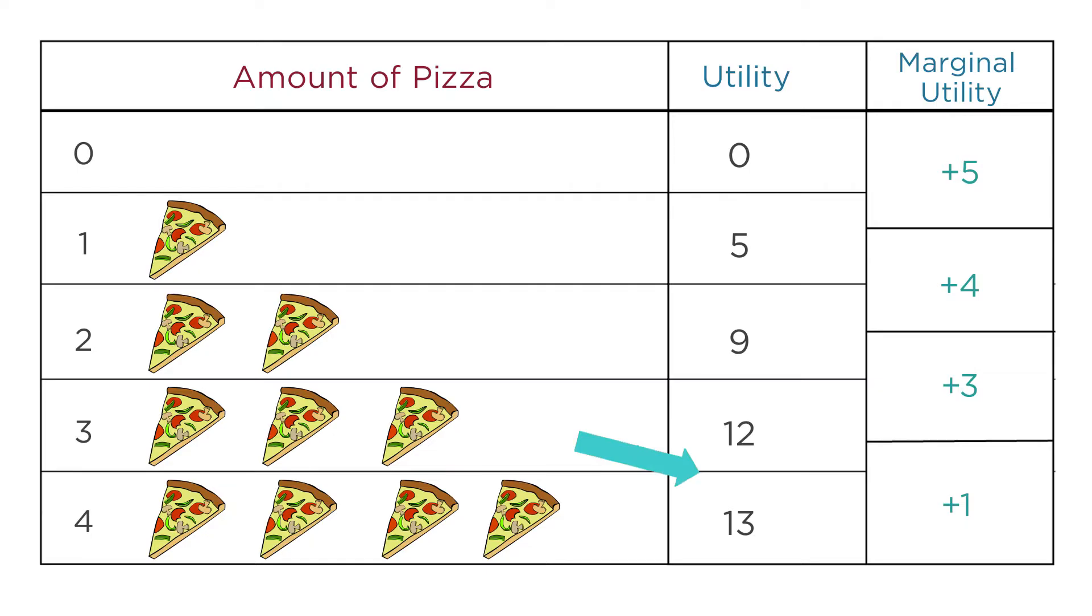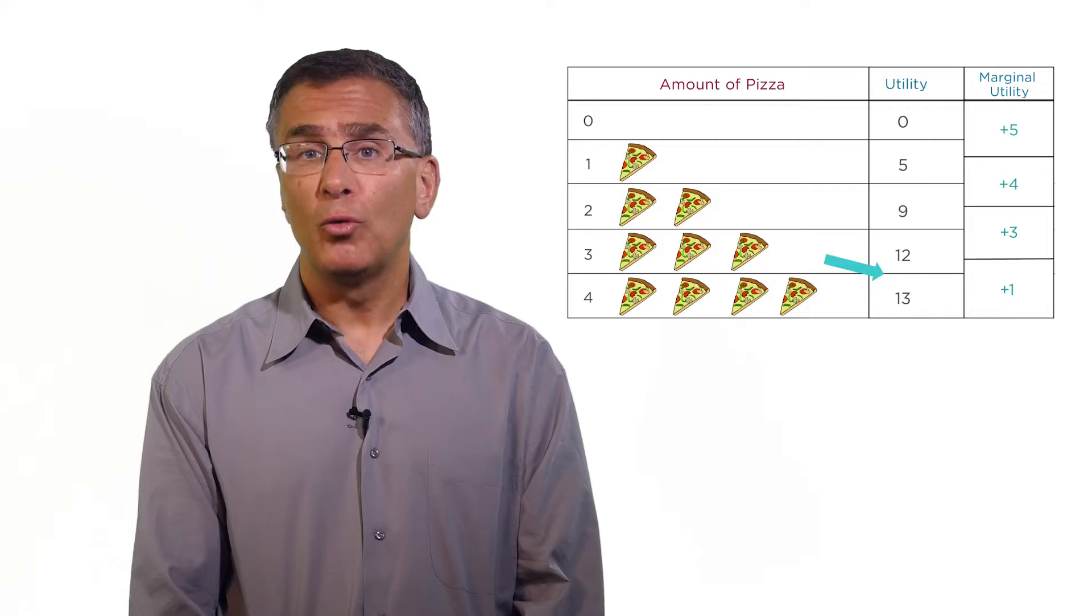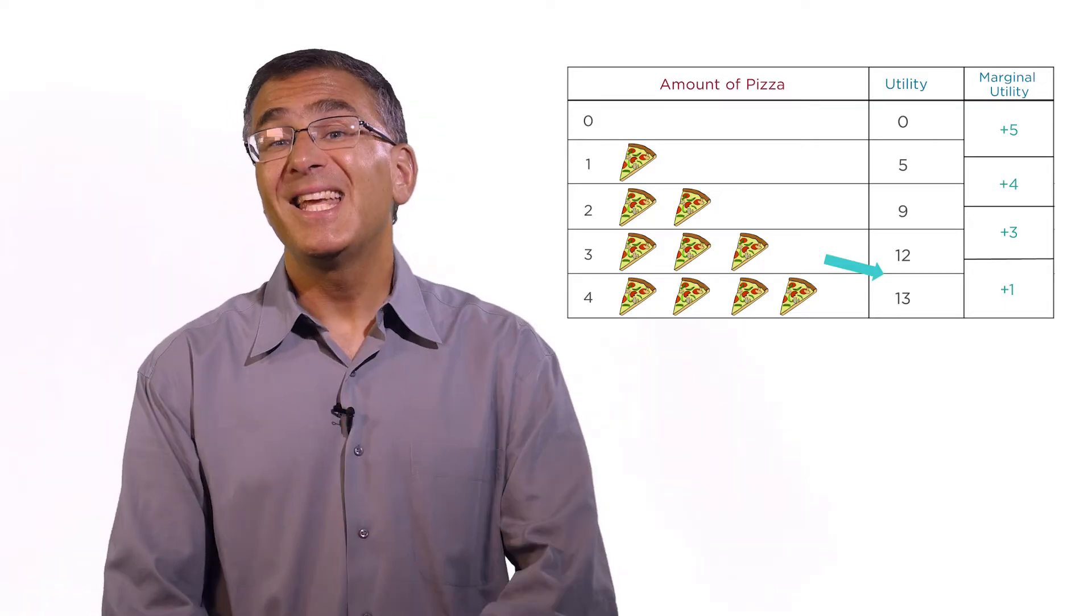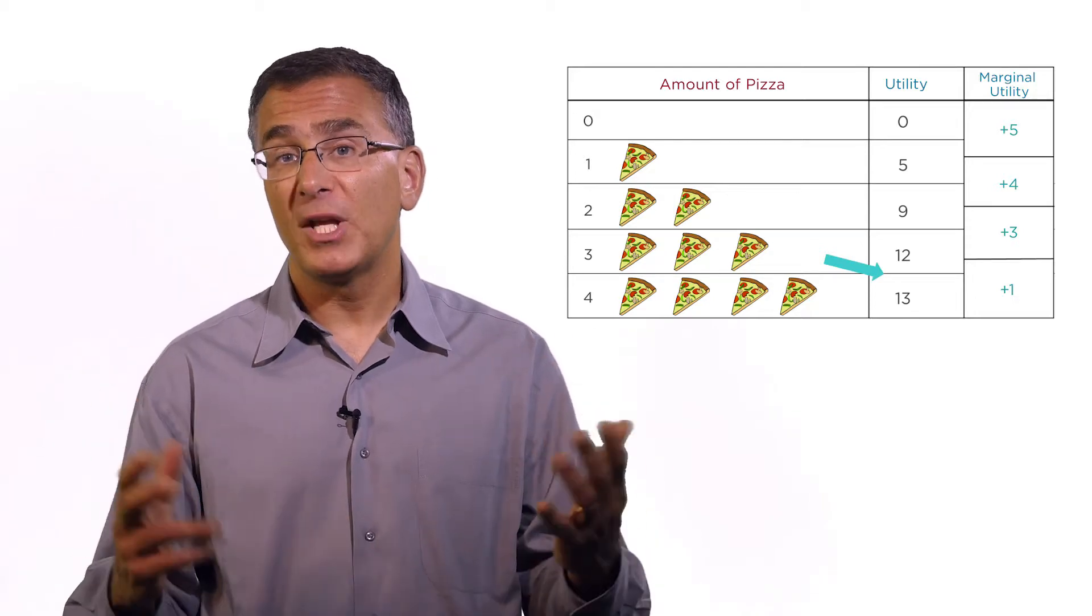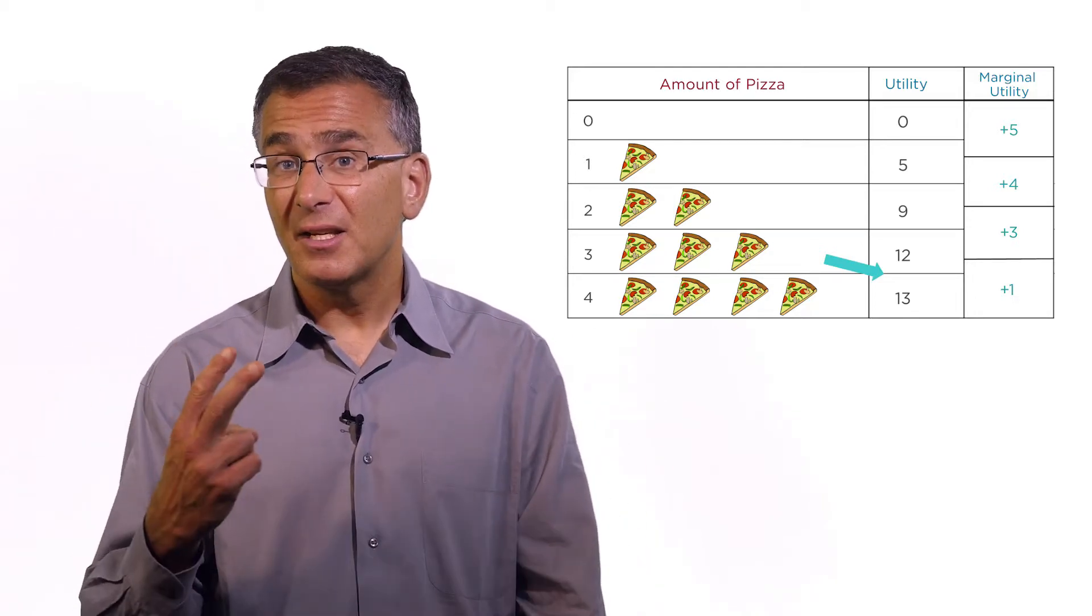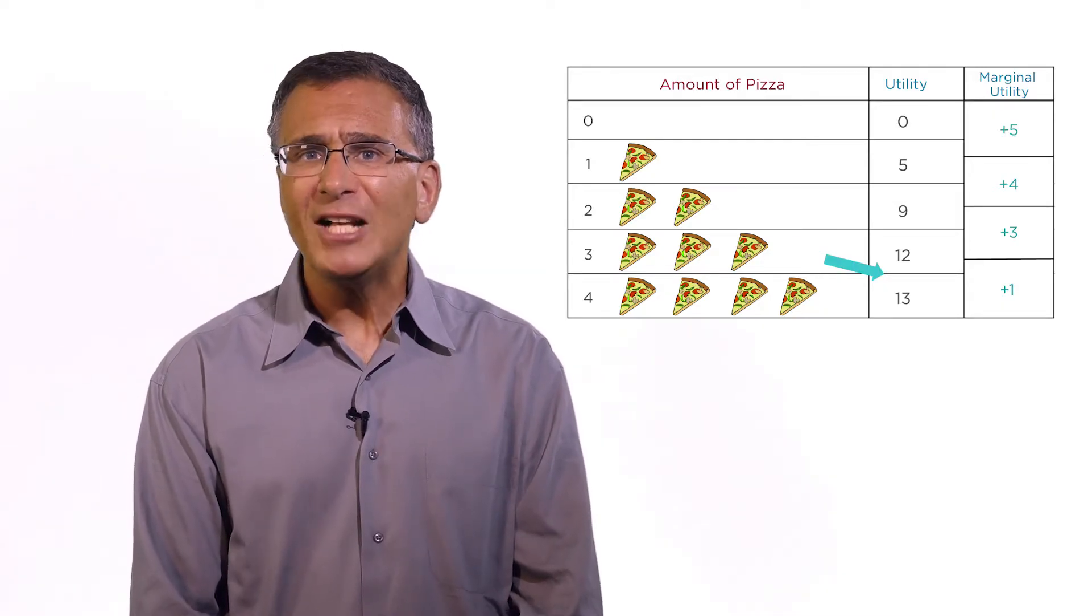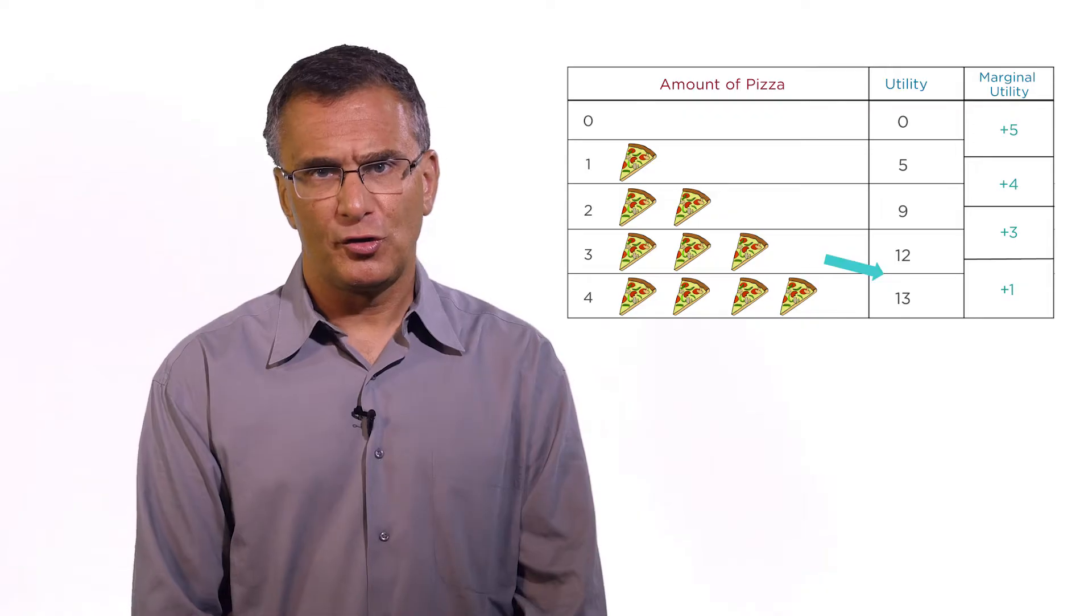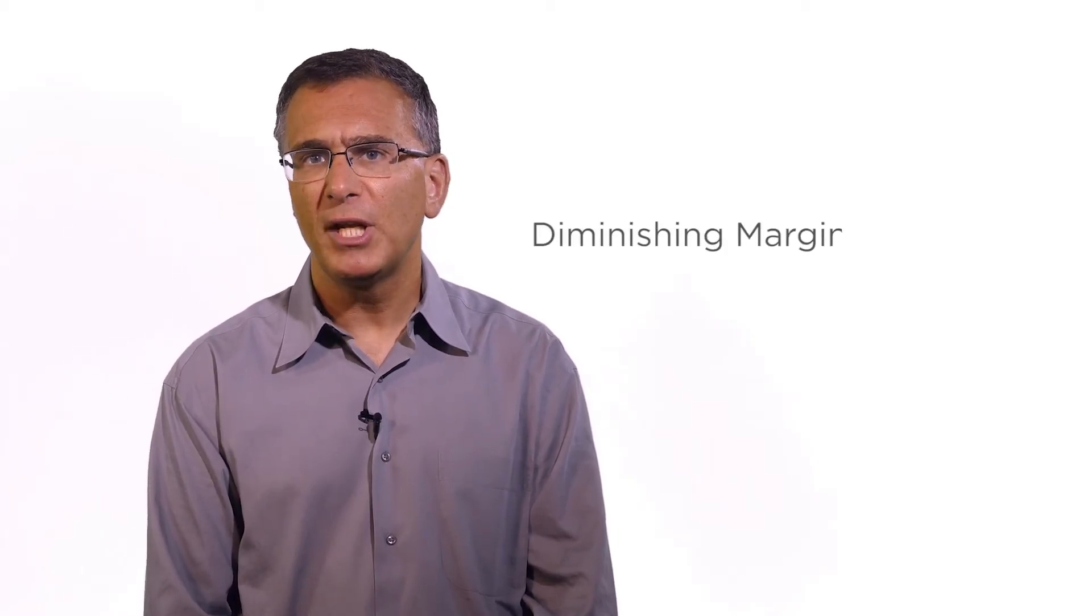Already we can see two key rules we'll use throughout the class. First, each slice of pizza makes you happier. More pizza, more utility. Second, each new slice of pizza makes you less happy than the previous one. In fact, we're almost always going to assume that each additional unit of a good makes you less happy than the previous one. And we're going to call this diminishing marginal utility of consumption.